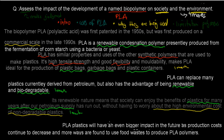If we want to go for the full mark, we also need to assess the future impact. PLA plastics will have an even bigger impact in the future as production costs continue to decrease and more ways are found to use food waste to produce PLA polymers. In the intro we said PLA is currently made from cornstarch, but if more ways to make it are found, we can produce even more PLA polymers at lower cost — giving PLA an even bigger impact on society. That should also earn a mark.